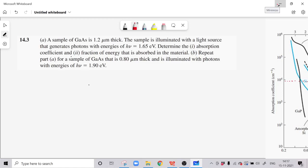In this video we will have a question from the optical devices chapter from Donald Neamen's semiconductor physics textbook. We have a sample of gallium arsenide which is 1.2 micrometer thick.